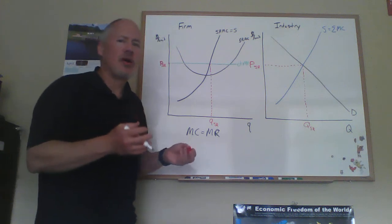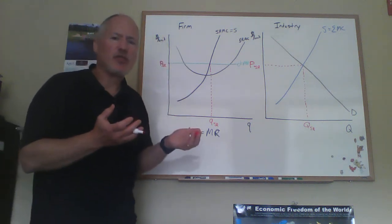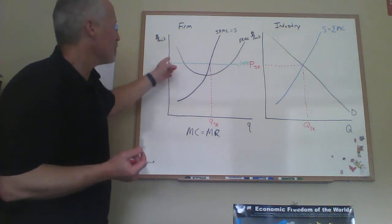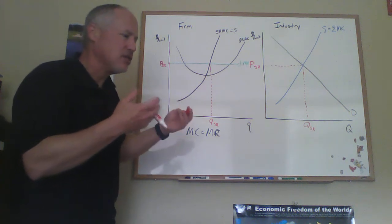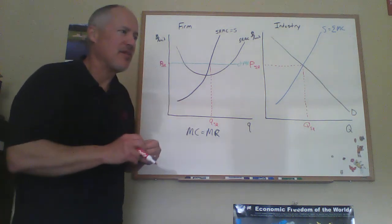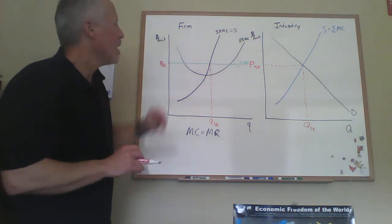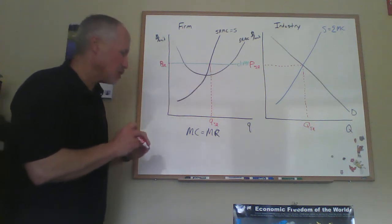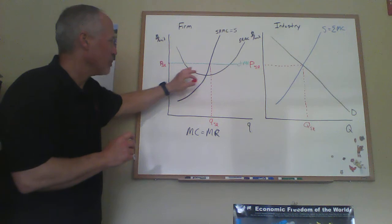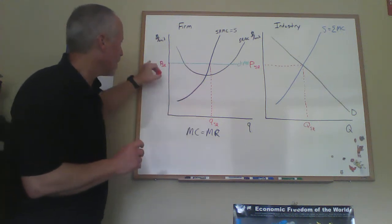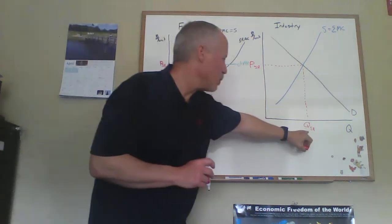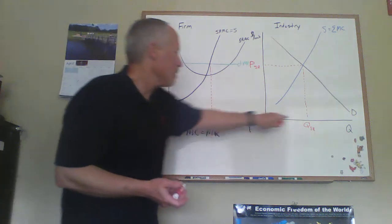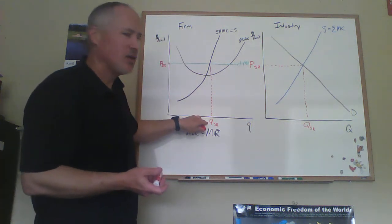One way to think about the firm diagram is that every firm is identical. If all firms have access to the same technology, they should have the same production possibilities. So we can think of this as a representative firm. In any event, we now know the price in the industry, the quantity supplied in the industry, and that's also the quantity consumers demand — so we have market clearing. And we know the quantity each firm would produce.